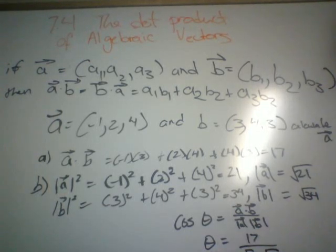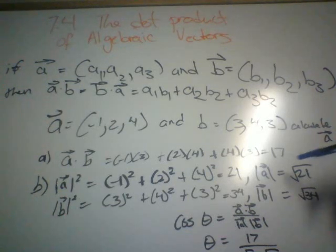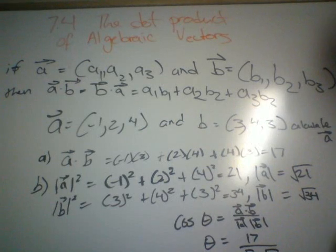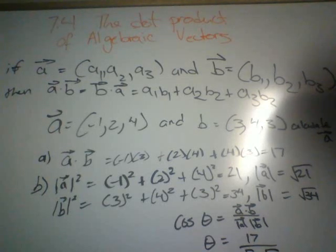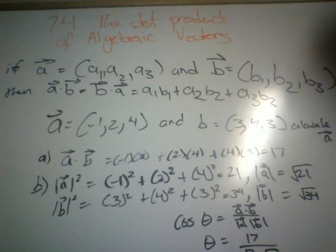We use cos theta equals vector A times vector B divided by the magnitude of A times the magnitude of B. Theta equals 17 divided by square root of 21 times square root of 34. We get a value of 0.6362 for cos theta. Then we inverse that value, so theta equals 50.5 degrees.